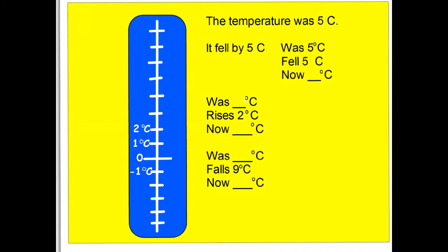This slide shows the most common place we encounter negative numbers: temperature. The temperature was five degrees and it fell by five degrees, so the temperature would now be down to zero. Let's complete a number line with temperatures — three, four, five, six, seven, eight degrees on the warmer side, and on the other side of zero: minus one, minus two, minus three degrees.